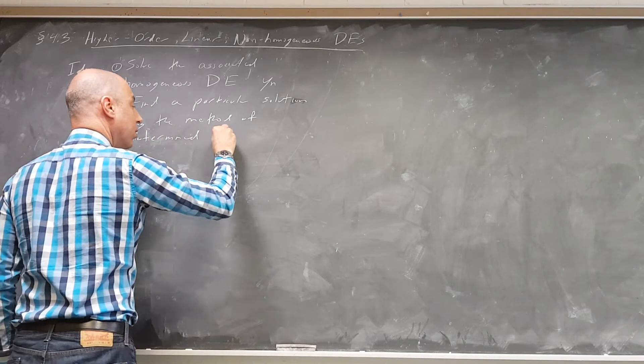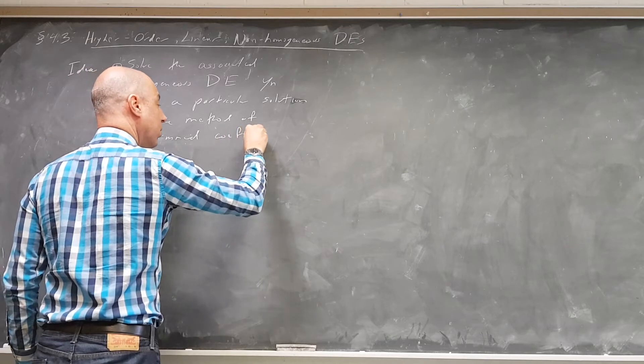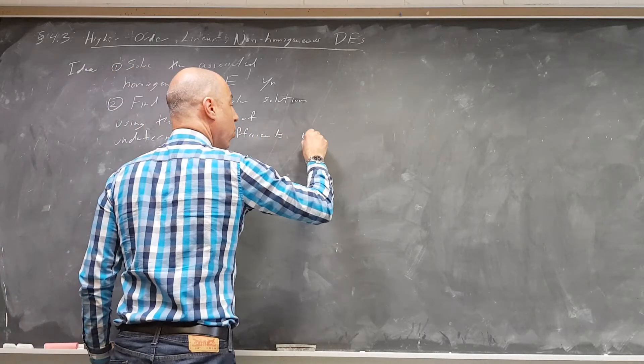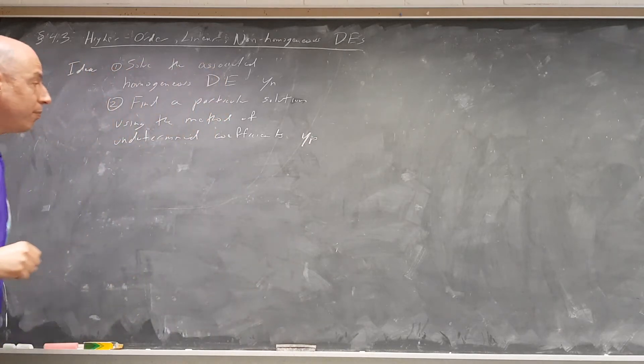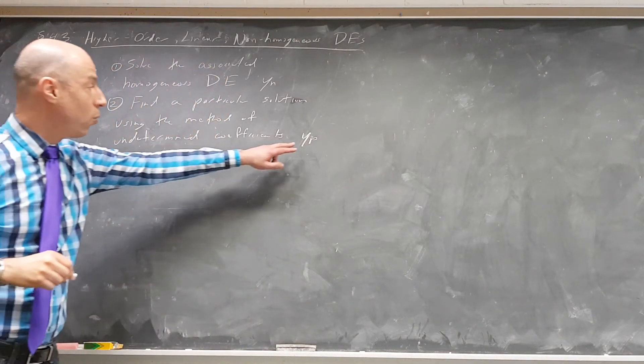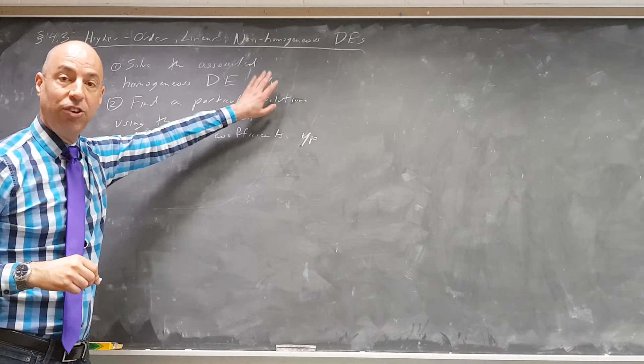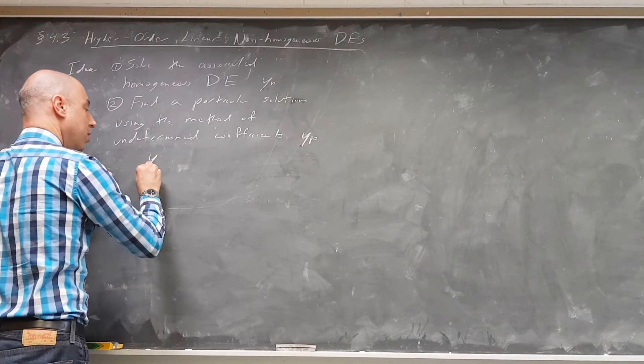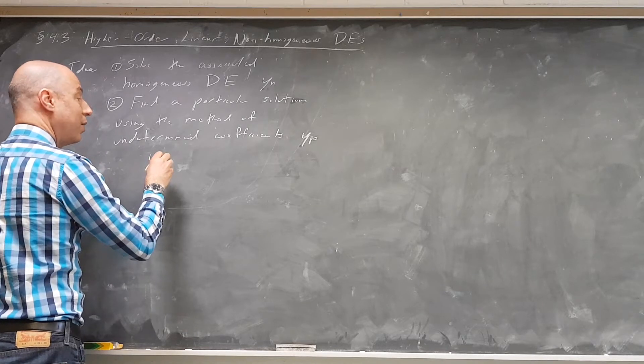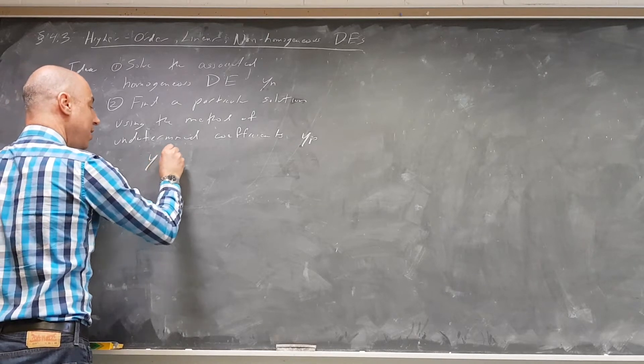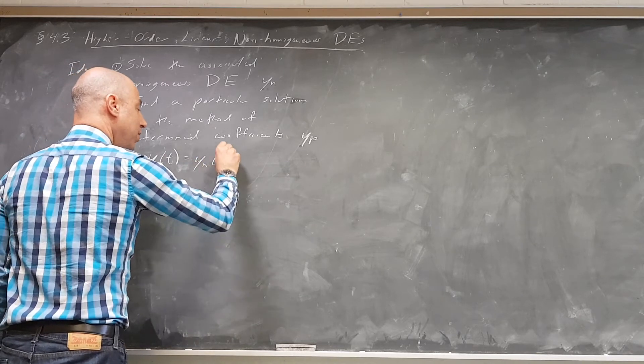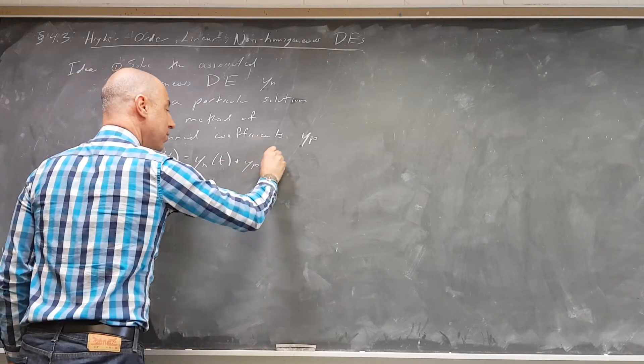Here we go. So we get just one y sub p, and of course y sub h has parameters in it. And then y of t will be y sub h of t plus y sub p of t.